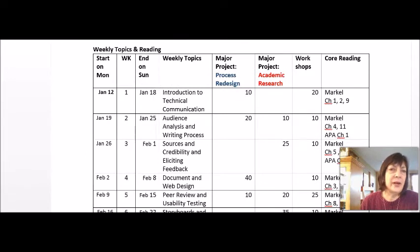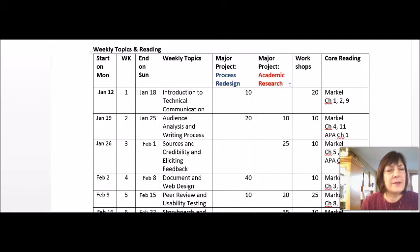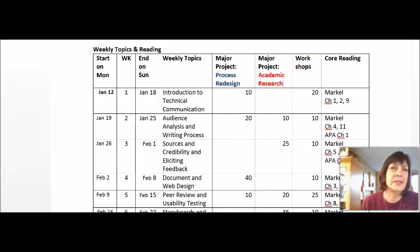So let's talk about how this course is designed. There are actually three areas that you will be working on over the eight weeks of the course. The first is a major project called the Process Redesign Project. Second is another major project called the Academic Research Project. And finally, there are a series of workshops that help you get engaged with the course.